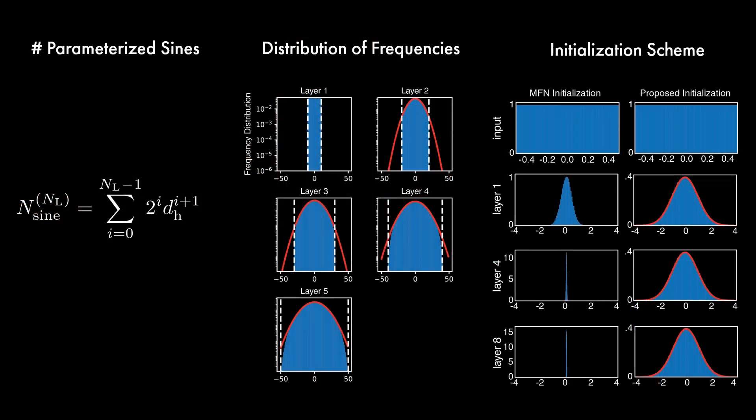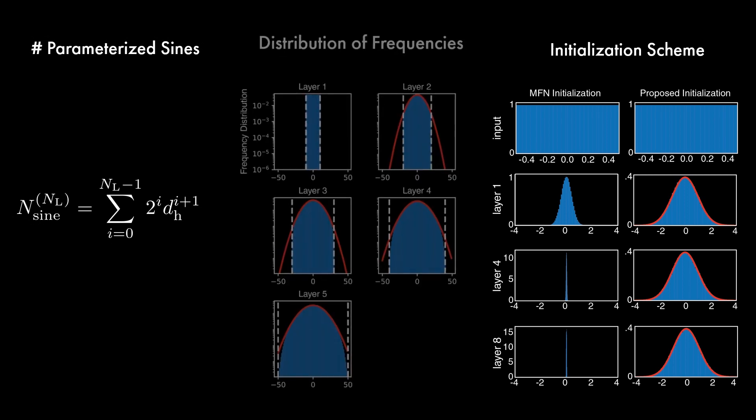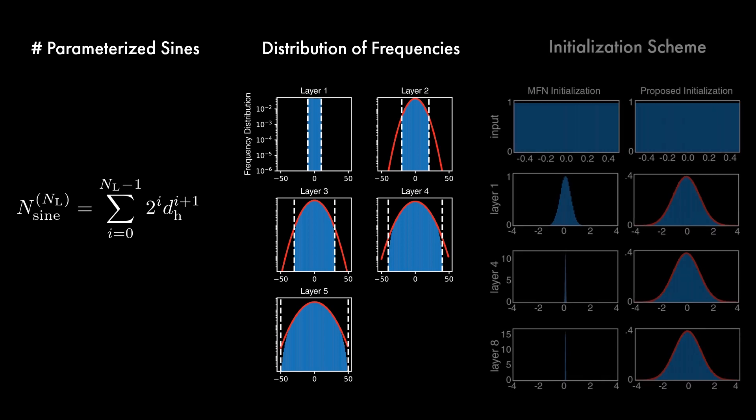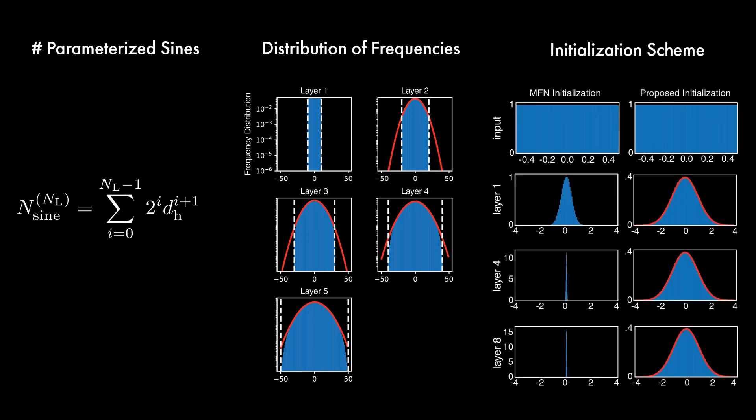In the supplemental, we provide detailed derivations of the number of sines represented by the network and the distribution of frequencies parameterized by the network. We also derive a new initialization scheme with well-behaved activation distributions, preventing activations that tend towards zero in the previously proposed scheme.